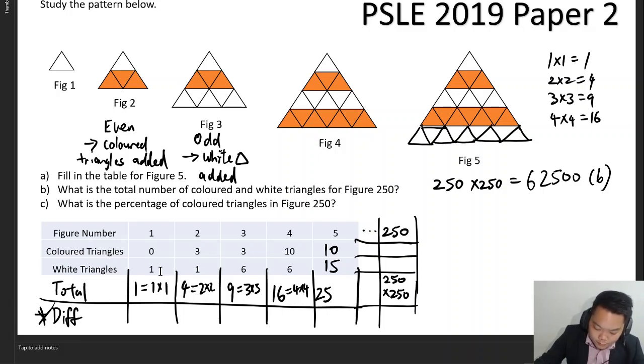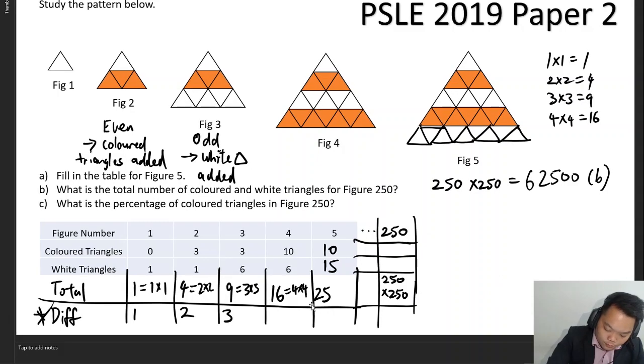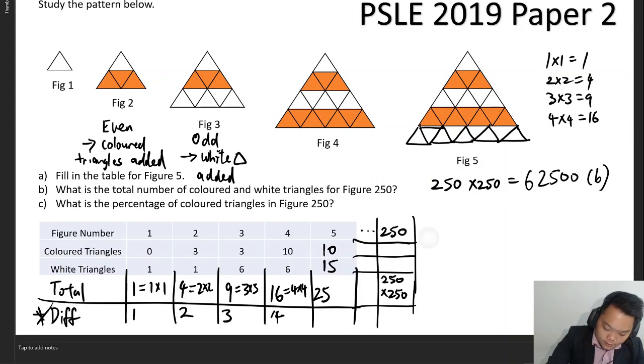If you look at the difference here, the white triangles is one. The difference here is one minus zero to give you one. The difference in this case, however, you can see it has flipped over. Now your colored triangles is more than your white triangles, so this is two. The difference here is going to be six minus three to give you three. The difference here will be ten minus six to give you four, and so on and so forth.